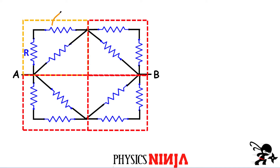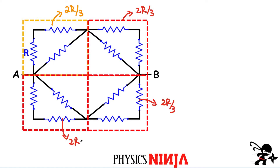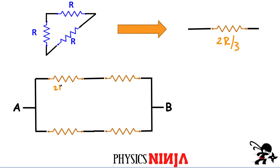We found that everything in this dashed box was equivalent to a resistor equal to 2R divided by three. Since each triangle is a combination of series resistors in parallel with one resistor R, the same analysis gives us 2R over three for this one, 2R over three for this one, and 2R over three for this one. Now we simply have to combine all of these new resistance values into one equivalent network. I've redrawn the original circuit, replacing those triangles with their equivalent resistance values.